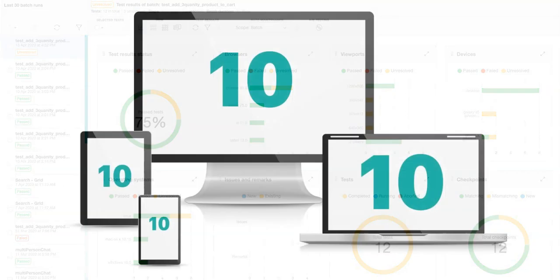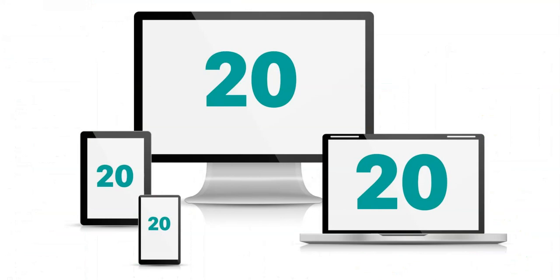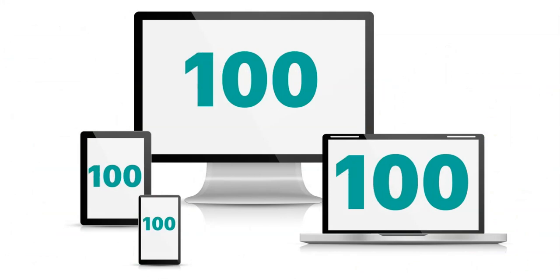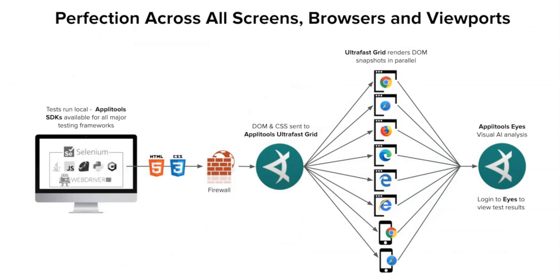Whether you have 10 tests, 20, or 100, it doesn't matter. The UltraFast Grid will visually test them all in parallel by rendering a snapshot of the state of your application onto all of these various platforms, making verification lightning fast while catching those pesky bugs that are often missed by traditional solutions.